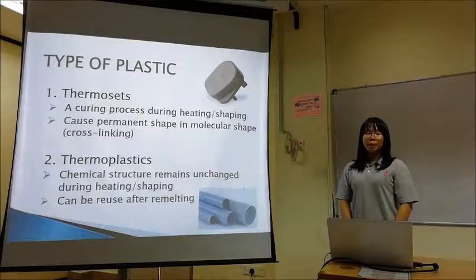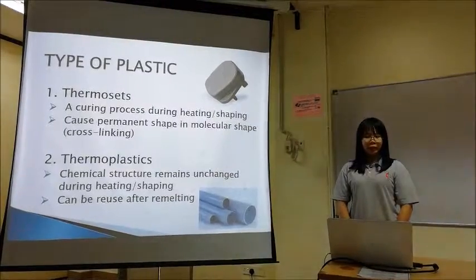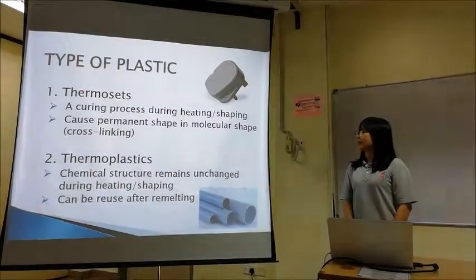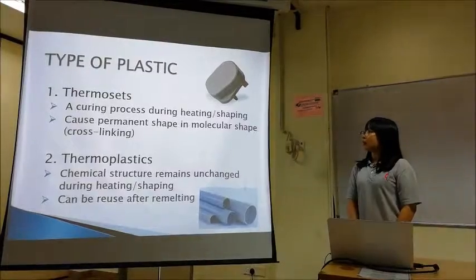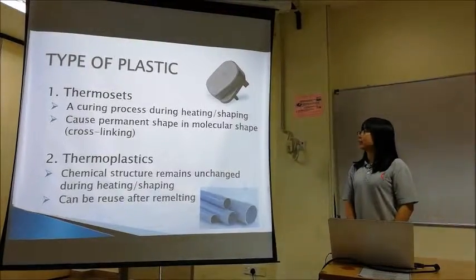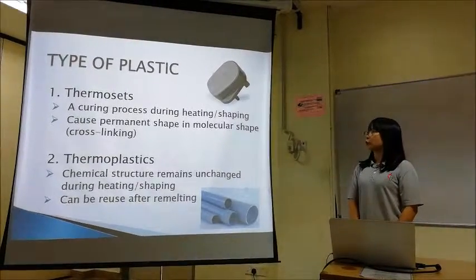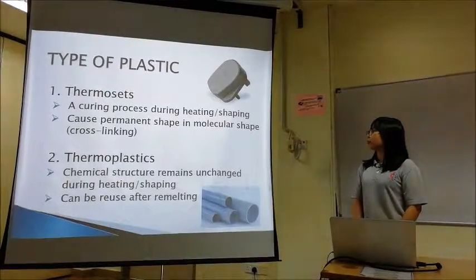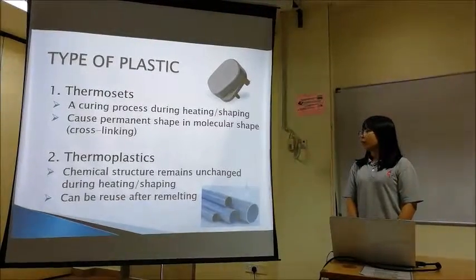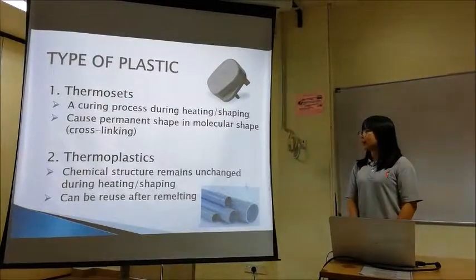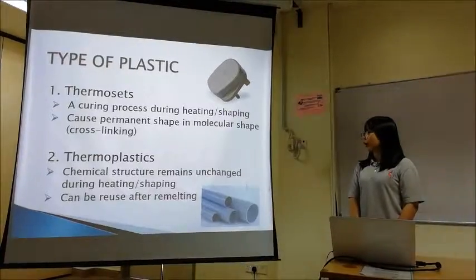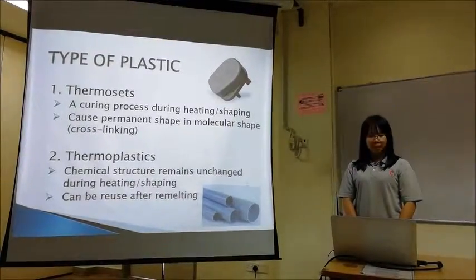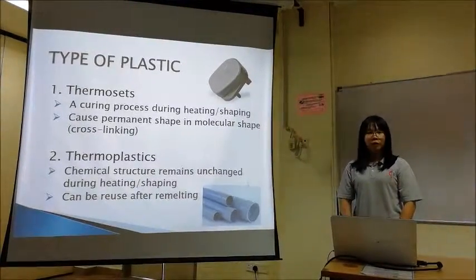The plastic is mainly divided into two types: thermosets and thermoplastics. Thermosets undergo a curing process during heating or shaping, and it causes a permanent change in molecular shape. For thermoplastics, the chemical structure remains unchanged during heating and shaping. Thermosets cannot be reused after re-melting.